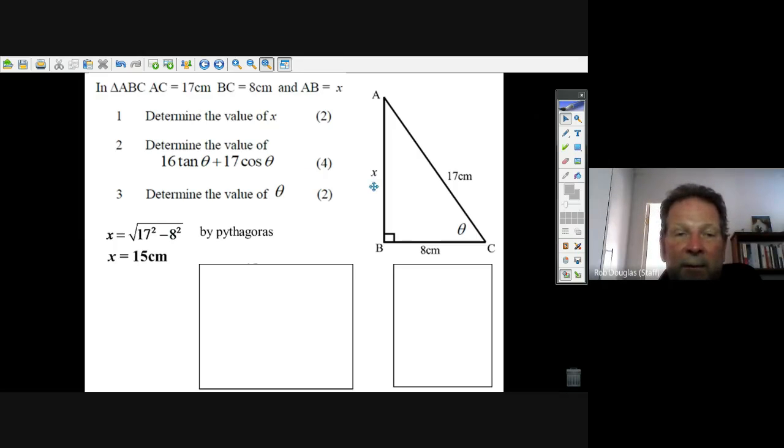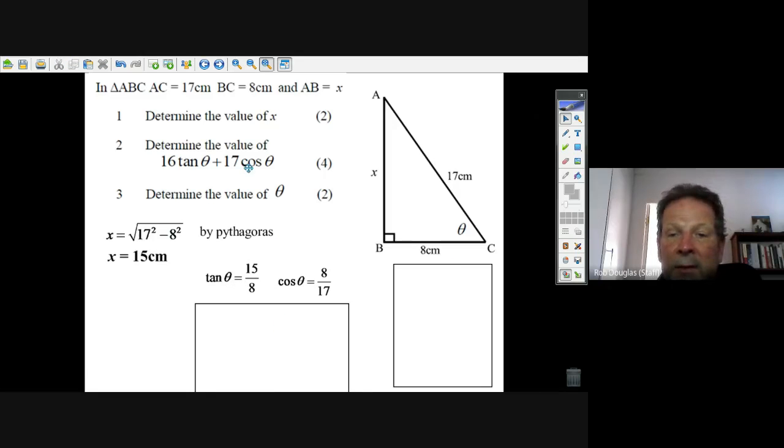Now that we know that's 15, we can work out the tangent of theta, which is opposite over adjacent: 15/8. The cosine of theta would be 8/17 because 8 is adjacent and 17 is hypotenuse. SOHCAHTOA tells me that adjacent over hypotenuse is cosine.